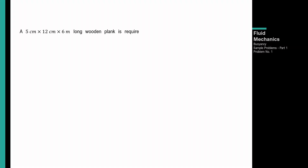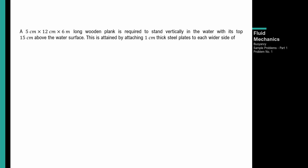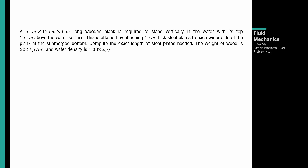A 5 cm x 12 cm x 6 m long wooden plank is required to stand vertically in the water with its top 15 cm above the water surface. This is attained by attaching 1 cm thick steel plates to each wider side of the plank at the submerged bottom. Compute the exact length of steel plates needed. The density of wood is 502 kg/m³, water density is 1002 kg/m³, and weight of steel is 7870 kg/m³.